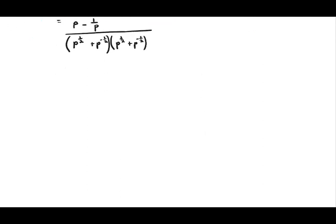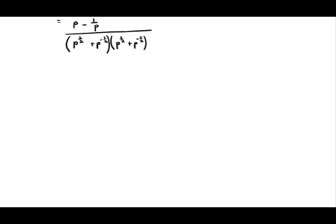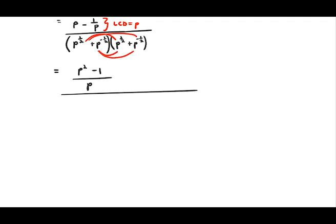Now focus back on the numerator. We need to find an LCD, which in this case is p. Using that LCD, we get p squared minus one over p in the numerator. Now our FOIL comes into play for the denominator: firsts, outers, inners, lasts.